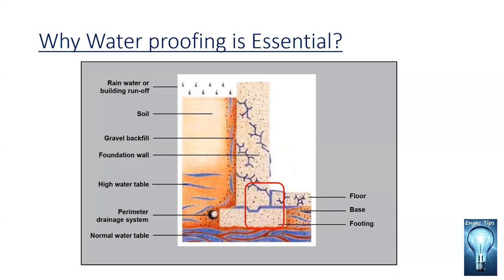To seal the wall-base joint, we normally use a water bar. I will first discuss the theory part and then move into the practical session. For sealing the base-floor joint, we apply a mild strip water bar — a 100 mm water bar. 100 mm is inside the base on each side.